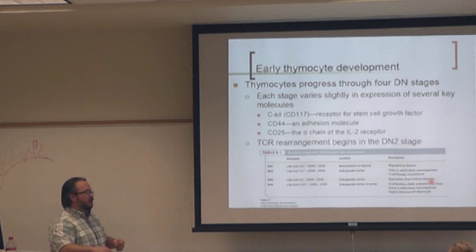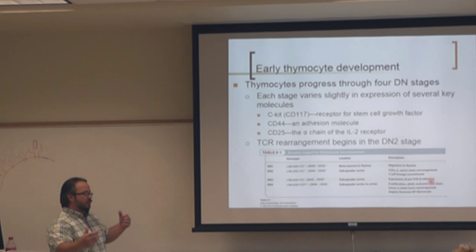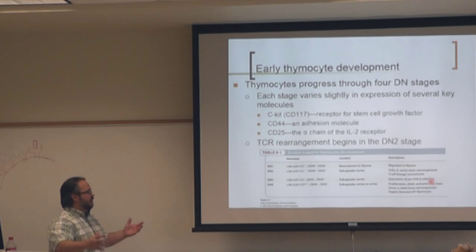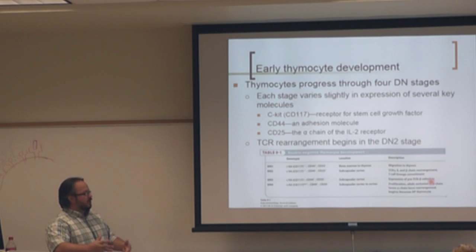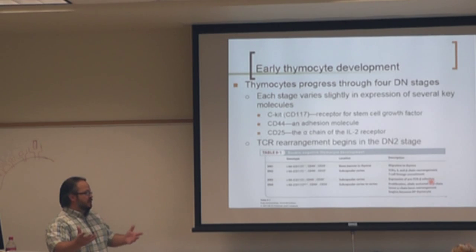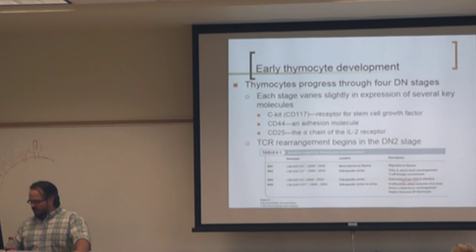It's called invariant because it doesn't have the variations that the alpha is going to have — it's all one sequence. This pre-T cell alpha doesn't play a role in stabilizing the T cell receptor to bind antigen. But if it binds to the beta, it will actually start to signal to the cell that this is a functional beta. It will start signaling to the cell to begin proliferating — sending a signal even though it's not bound to antigen. This allows the cell to move on to the double negative 4 stage.